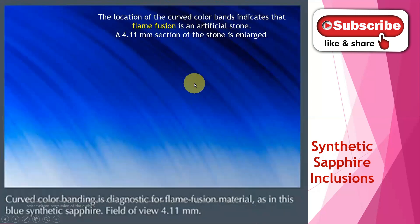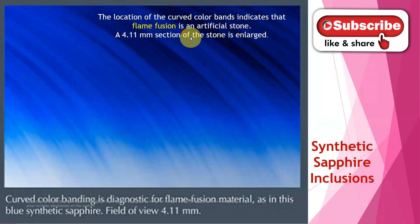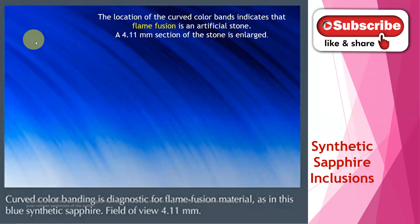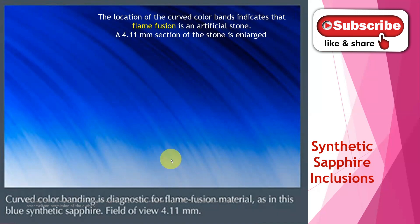This is a very famous one — synthetic sapphire. The method is flame fusion. When we use the flame fusion method, it can show curved color bands. Curved lines, all are curved, not parallel straight lines. You can remember in lesson number two we discussed the Czochralski and star effect and learned that straight lines — parallel straight lines — appear in natural stone. But in synthetics it is curved. So that is the main difference we have to remember: this curved banding tells us it is synthetic. This is a 4.11 millimeter section enlarged.